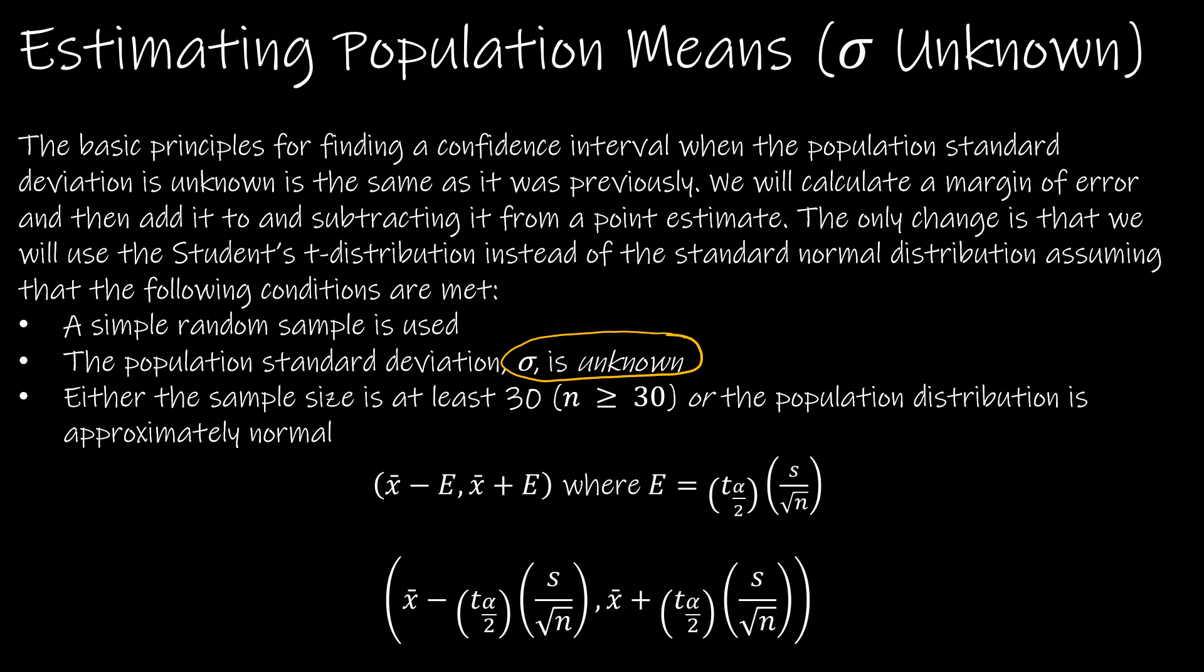You're going to notice that the calculations we're going to do are very similar to what we just did, except now we're using the student's t distribution instead of the standard normal distribution. Notice here this is t alpha over 2 as opposed to z alpha over 2. That's the biggest change.